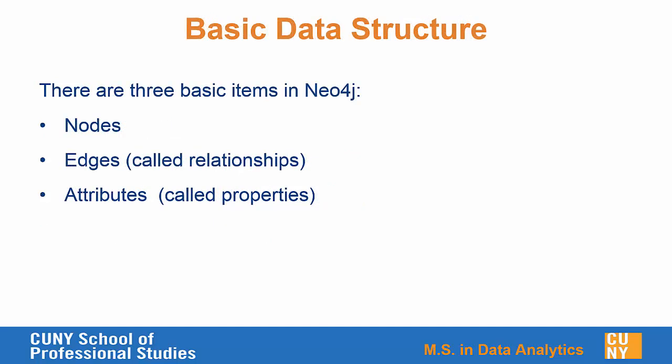There are really only three basic items in Neo4j. The first is a node, which you can think of as a document that has certain properties, typically stored in key-value pairs, very similar to document databases such as MongoDB. There are also edges, or what Neo4j calls relationships, between the different nodes, and those relationships can also store properties. This is often described as following a property graph model — nodes and edges are the basic building blocks, and each can contain attributes or properties.